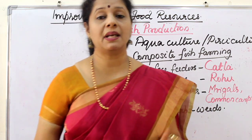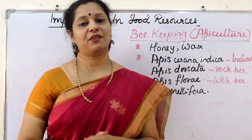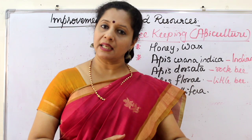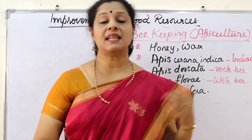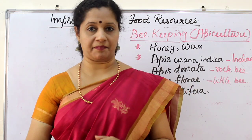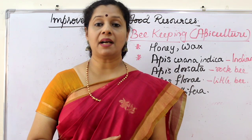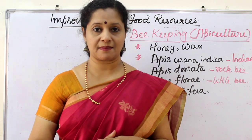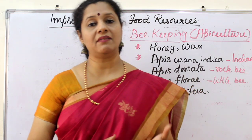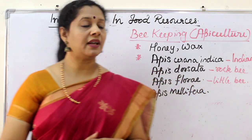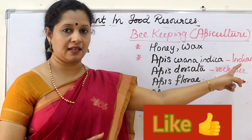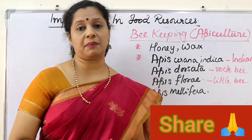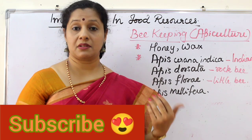The last part of animal husbandry discusses beekeeping, or apiculture. It is a low-investment project and is used by farmers as an additional income-generating activity. From beehives we get honey as well as beeswax, which is used in many medicinal preparations. Indian varieties of honey bees include Apis cerana indica (Indian honey bee), Apis dorsata (rock bee), and Apis florea (little bee). For high-yielding purposes, the Italian variety is also used.